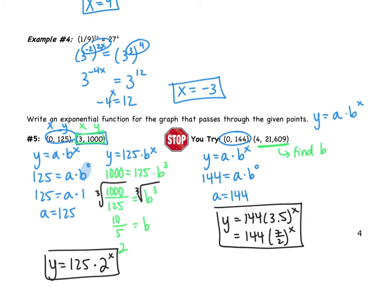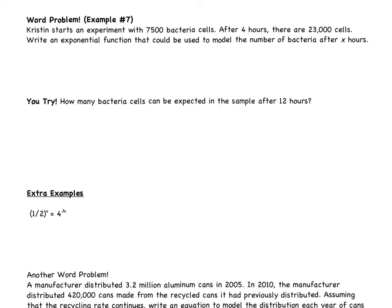We have one more problem to do. It's going to take this skill of writing the function, and it's going to apply it to a real-life context or situation. So what we're going to do right now is we're going to take that skill of writing the exponential model, and we're going to apply it to a word problem. So Kristen starts an experiment with 7,500 bacteria cells. After four hours, there are 23,000 cells. Write an exponential function that could be used to model the number of bacteria after x hours. This one's trickier because we don't have points yet. We need to write them ourselves.